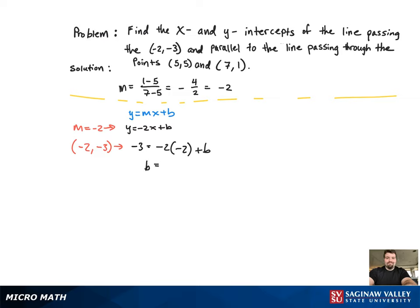So we have b equal to negative 7. Now we're going to plug that into the previous equation. And that's the equation of our line.